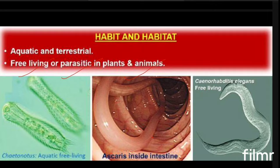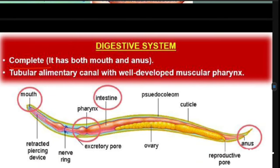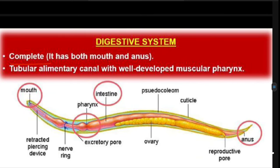Checking the digestive system, they have a complete digestive system — that means they have a mouth and an anus. It is a complete digestive system with entirely different openings for taking in food and eliminating excreta. Their alimentary canal is in tubular form, and they have a very muscular pharynx for chewing and grinding food materials.